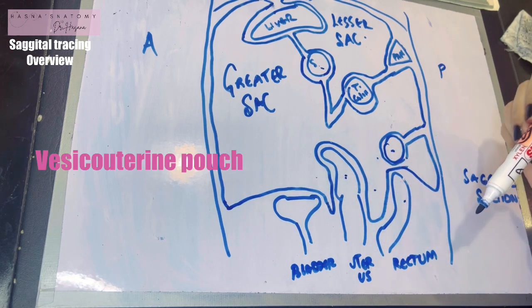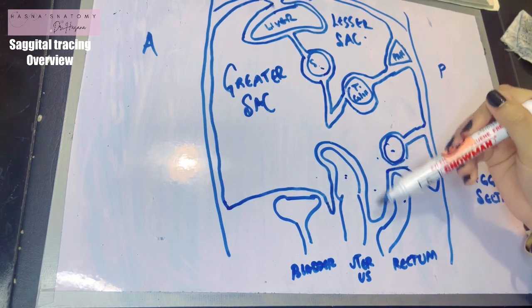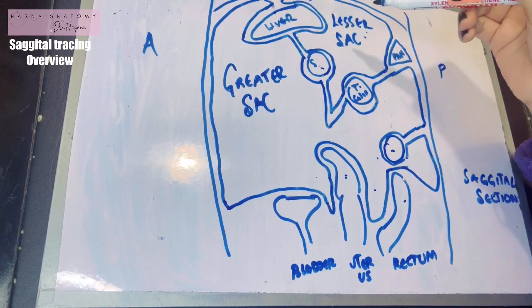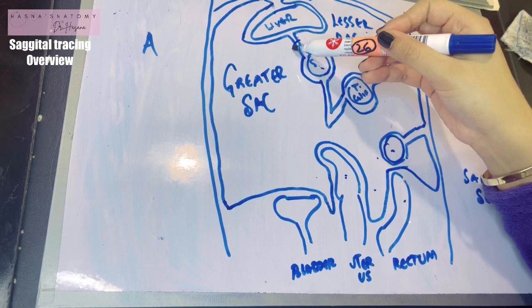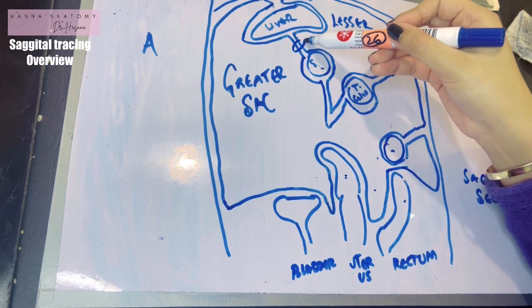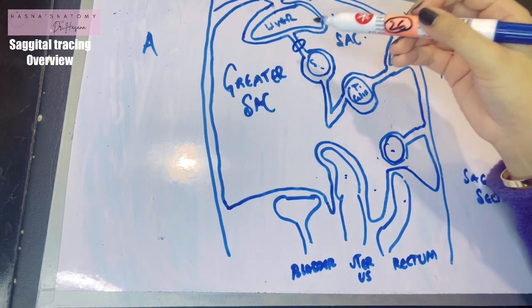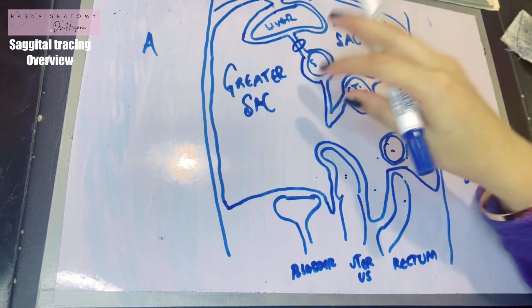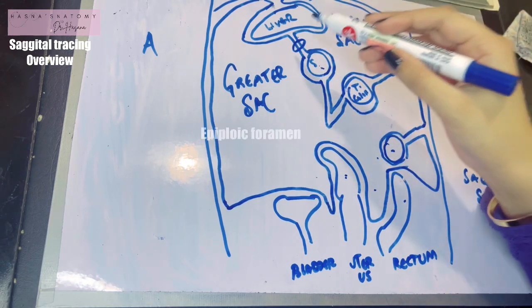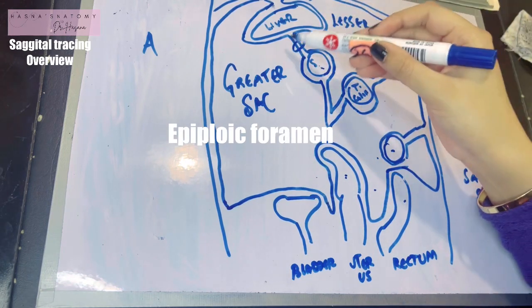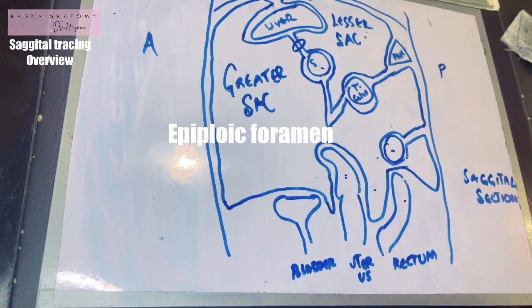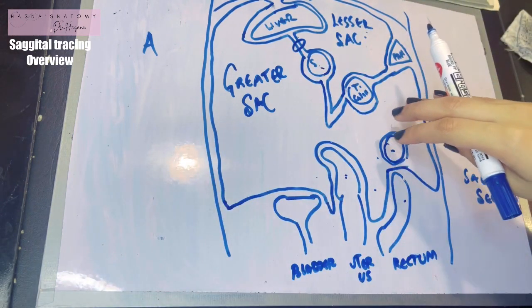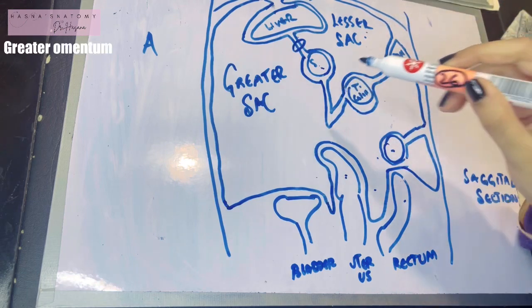The large peritoneal fold running from the stomach to the liver is known as the lesser omentum. The fold running from the greater curvature of the stomach, folding upon itself with four layers, is the greater omentum. The transverse mesocolon and the mesentery are also identified here. The pouch between the bladder and the uterus is the vesicouterine pouch; between the uterus and the rectum is the rectouterine pouch. There is a connection between the greater and lesser sac — the epiploic foramen — lying behind the free right margin of the lesser omentum.